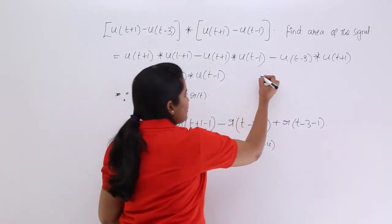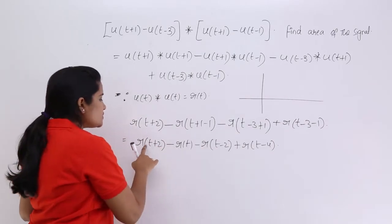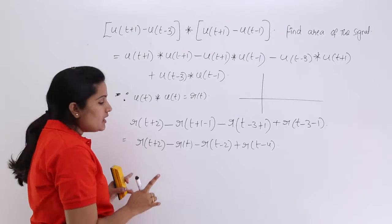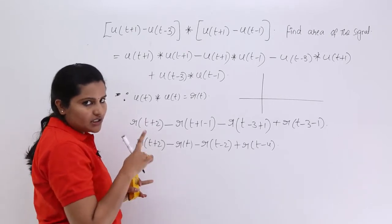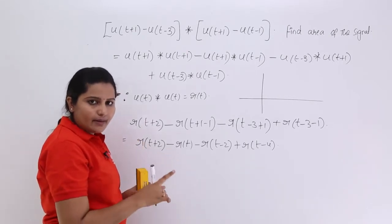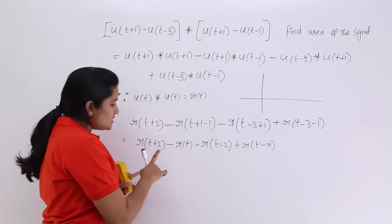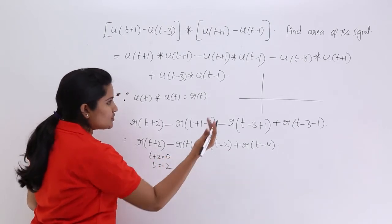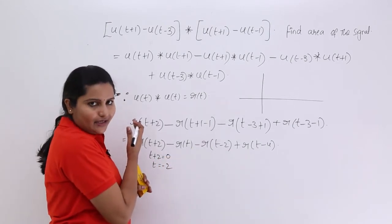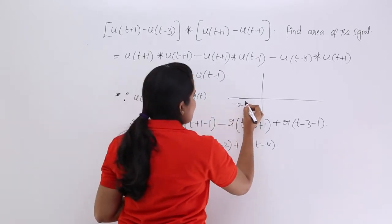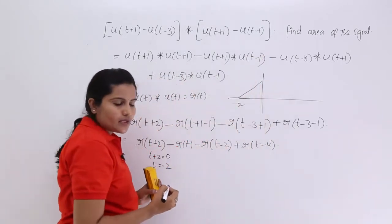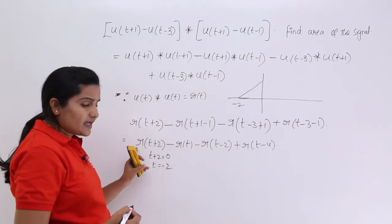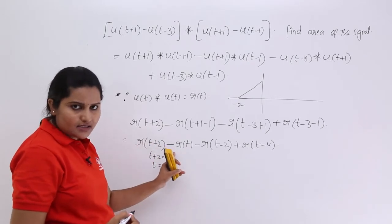Here I want to draw my signal. First, r(t+2) is a ramp — specifically a shifted ramp. Since t+2=0 gives t=-2, it has a negative shift, so it starts rising from t=-2. Now here we are having a decaying ramp. So this is a rising ramp and this is a decaying ramp.